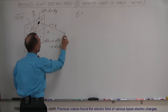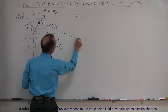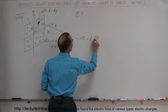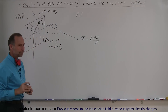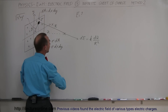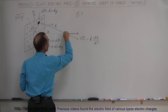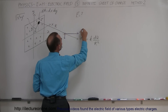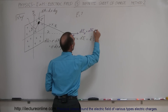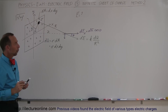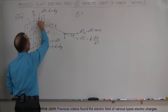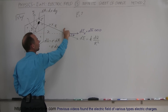Now, what is the electric field at the point of interest due to this charge element? It will point in the direction of r, so dE equals k times dQ divided by r squared. I want to know the electric field in the z direction. The perpendicular component to the plane is dE_z, and the parallel component is in the plane. If I call this angle theta, then dE_z equals dE times cosine of theta.